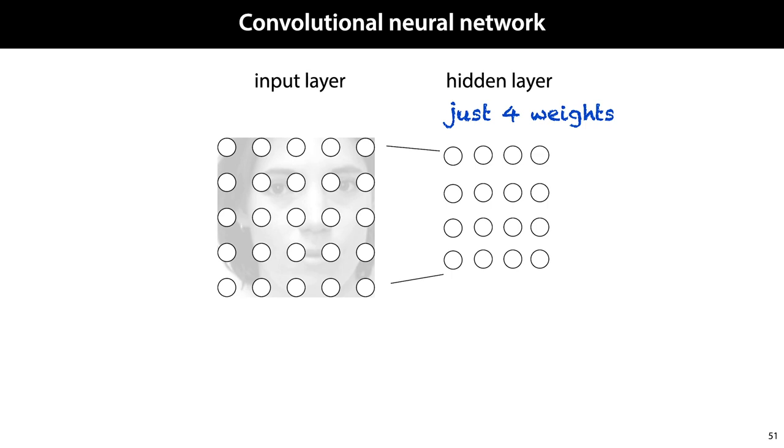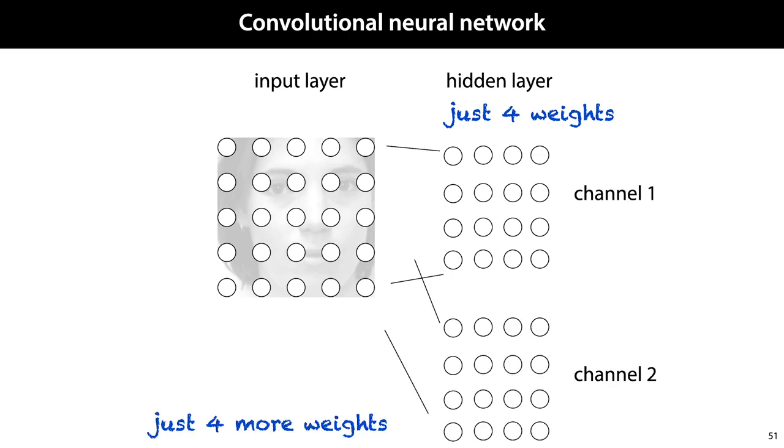To extend the hidden layer, we can add additional channels. For every extra channel, we follow the same procedure, but now with 4 new weights. If, as shown here, we have a 5×5 input layer with 2×2 pixel neighborhoods and 2 channels, we get a network with 25 inputs and 32 nodes in the hidden layer.